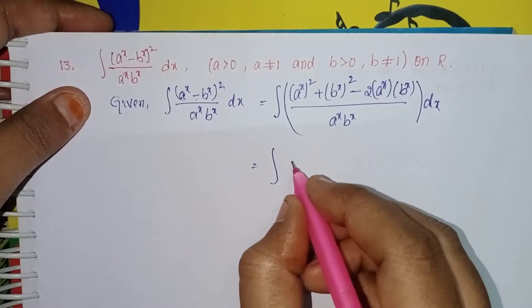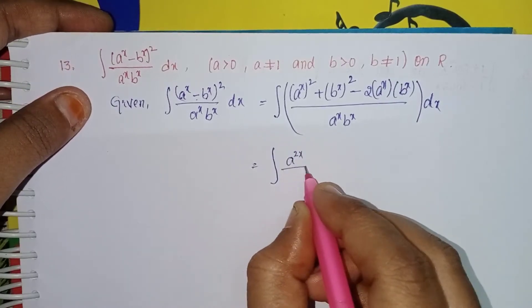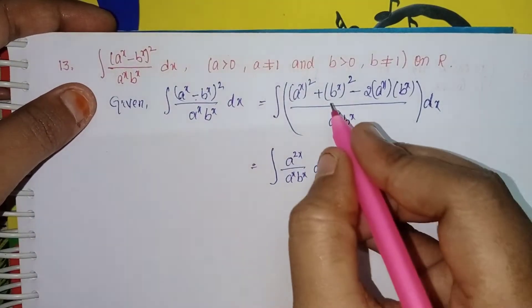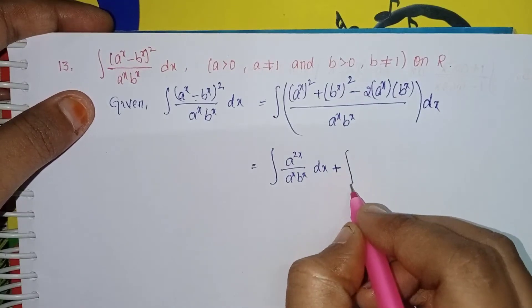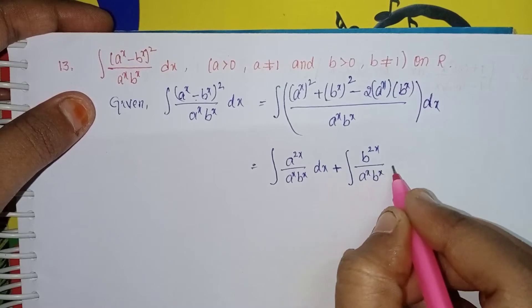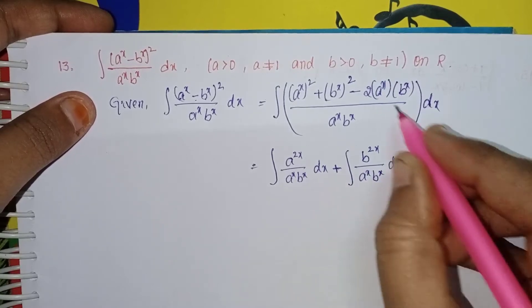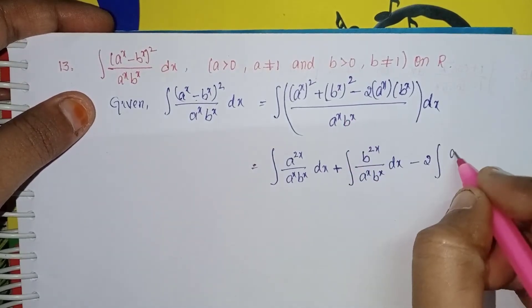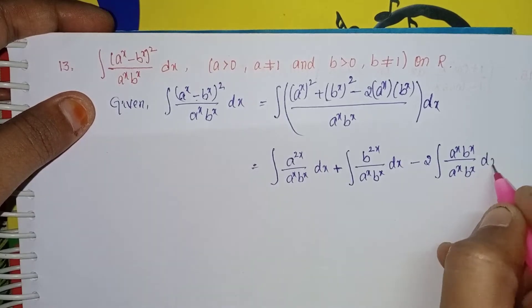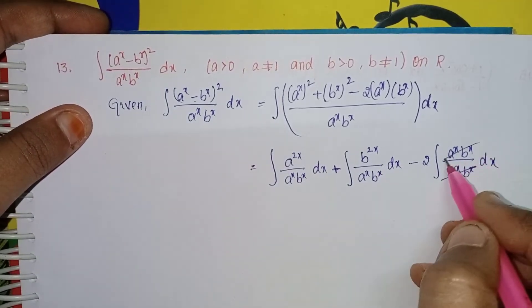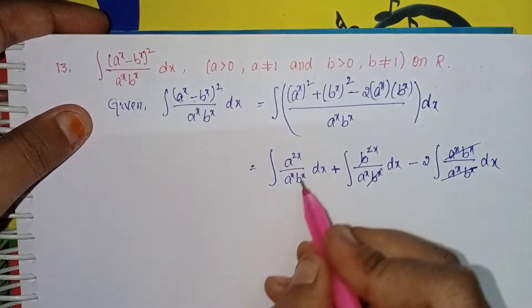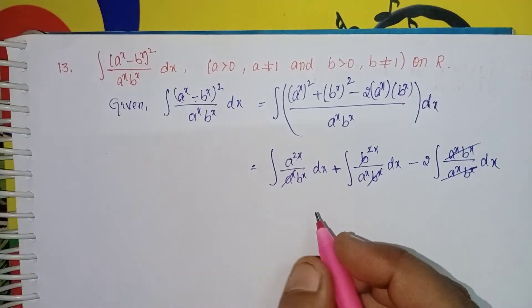Now write as separate integrals: integral of a^(2x) by (a^x · b^x) dx, plus integral of b^(2x) by (a^x · b^x) dx, minus 2 times integral of (a^x · b^x) by (a^x · b^x) dx. Here a^x · b^x cancels in the last term.